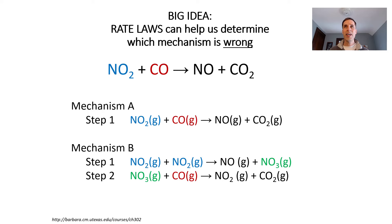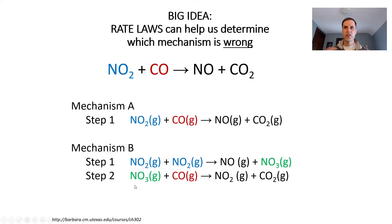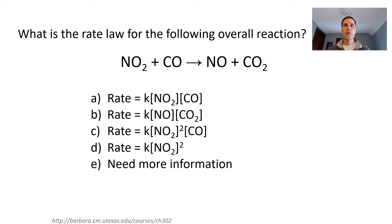The big idea is that rate laws can help us determine which mechanisms are wrong. Consider NO2 reacting with carbon monoxide to form nitrogen monoxide and carbon dioxide. We can imagine a couple of ways this could happen: it could all happen in one step where the two molecules collide and oxygen gets transferred, or two nitrogen dioxides might have to react together first to form a different compound that eventually gives our product. Take a moment to think about what the rate law would be.